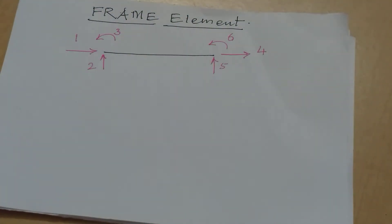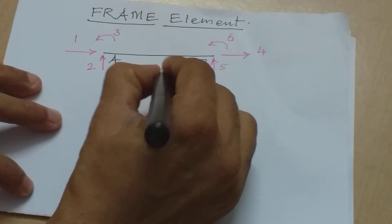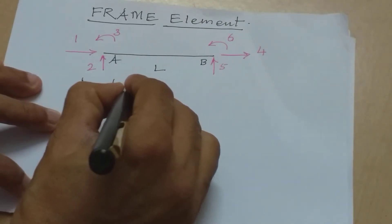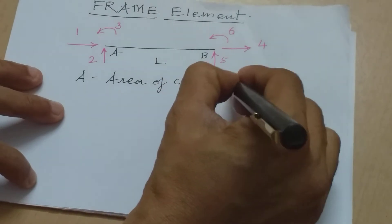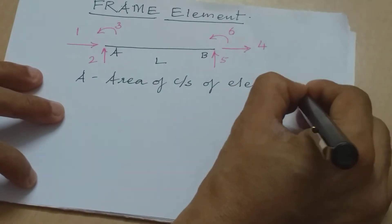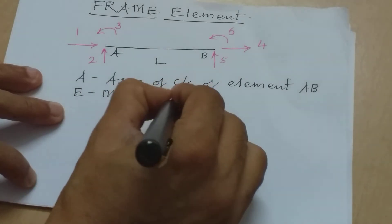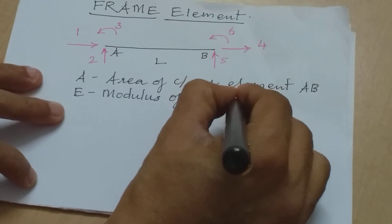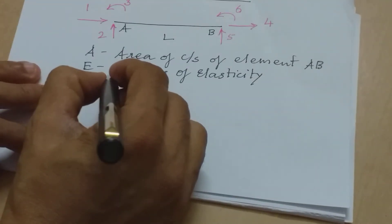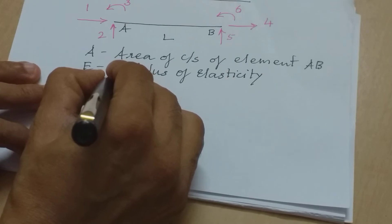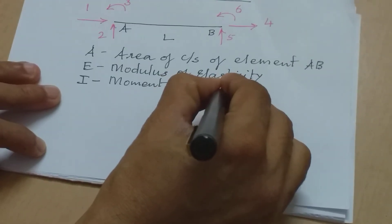Any frame element AB of length L — where L is the length, A is the area of cross section, E is the modulus of elasticity of the material, and I is the sectional property, that is, the moment of inertia of this section.